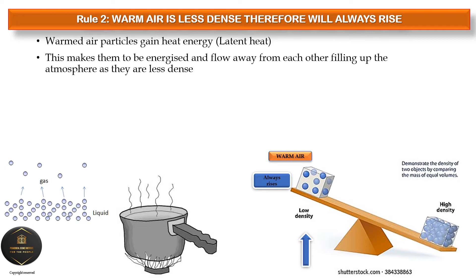Rule number two: warm air is less dense and therefore will always rise. You need to always remember the relationship between density and temperature — they are always opposite to each other. When we have higher temperatures, density is low. When we have low temperatures, density is always higher.